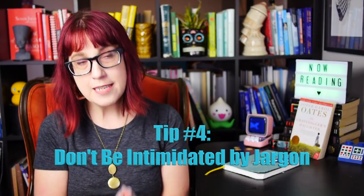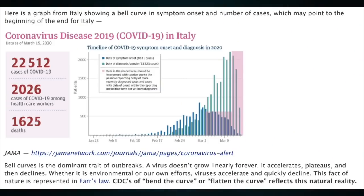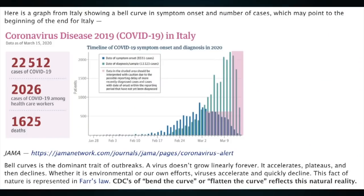Tip number four: don't be intimidated by jargon. Jen tells us to 'watch the bell curve,' writing: 'Bell curves is the dominant trait of outbreaks. A virus doesn't grow linearly forever. It accelerates, plateaus, and then declines. This fact of nature is represented in Farr's law.' That's more or less correct, but it's strange to call it a 'fact of nature' — you'd never hear that from a scientist — and equally strange to randomly name-drop Farr, a researcher who suggested epidemics may follow a regular curve back in the 19th century. Jen throws all of this at us with a chart he says shows a bell curve in Italy's symptom onset and case numbers, claiming it 'may point to the beginning of the end for Italy.' He wants you to see that bell curve and assume Italy is going to be just fine.